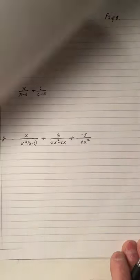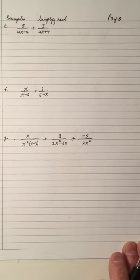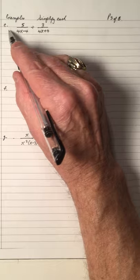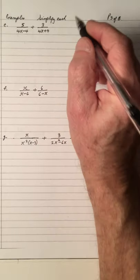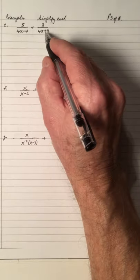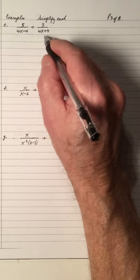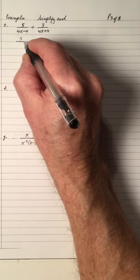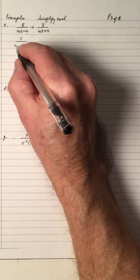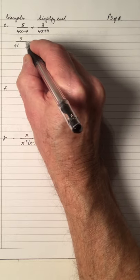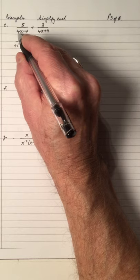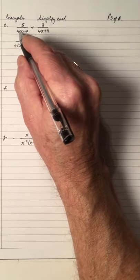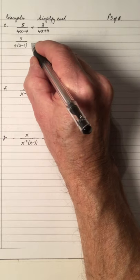Let's try some more examples — the more you do, the better you get. Example E: again, we look at the denominators. They're not the same, but if you factor them, you'll find the LCD easier. So 4x minus 4 has GCF 4, giving 4(x−1). And the other denominator also has GCF 4: 4x plus 4 gives 4(x+1).